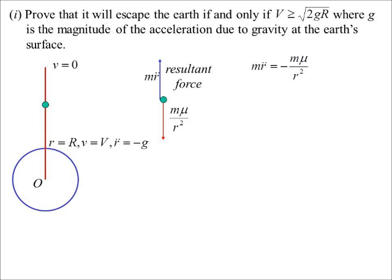It's negative because it's in the opposite direction to my resultant force. Well, we like to work with acceleration, so the first thing I do is divide both sides by the mass, and there's my acceleration formula. Acceleration is minus mu on R squared. Acceleration is in terms of displacement.